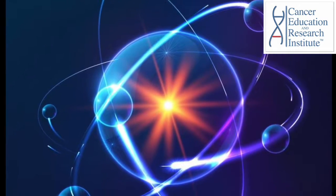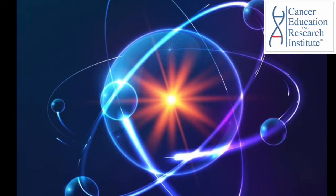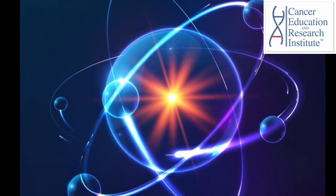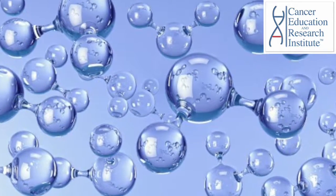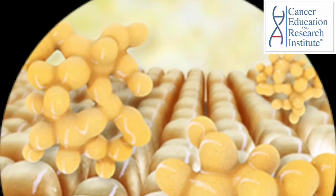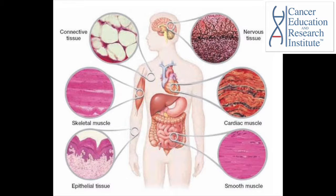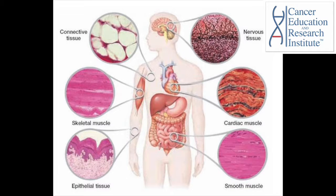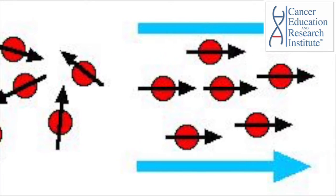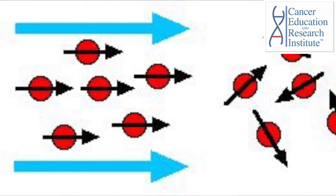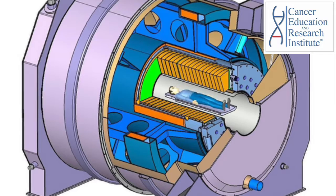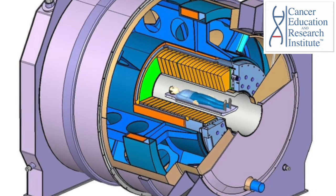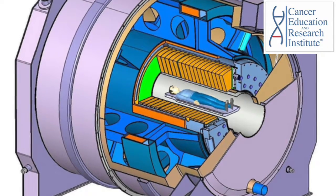MRI works through the density of protons of the hydrogen atoms in tissues. Hydrogen atoms are found plentifully in living organisms, especially in water molecules and fat. The density and the movement of the hydrogen atoms differ between tissues. The protons of the hydrogen atoms in the body are stimulated with radiofrequency energy.